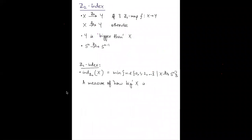Now we'll look at the Z2 index. For two spaces X and Y, we write X →_Z2 Y if there is a Z2 map from X to Y. Many of the proofs will come down to showing that a Z2 map does not exist between a pair of spaces. If there is a Z2 map from X to Y, in some sense Y is bigger than X. The Borsuk-Ulam theorem tells us precisely that there is no Z2 map from S^n to S^{n-1}, because Z2 maps for spheres correspond exactly to antipodal maps, and we know no such map exists.